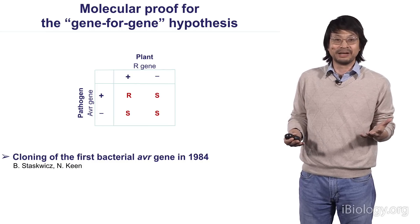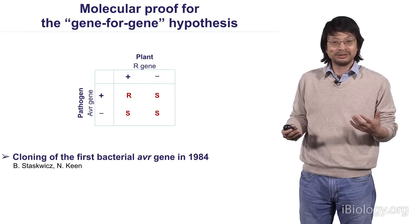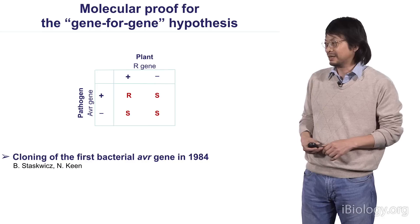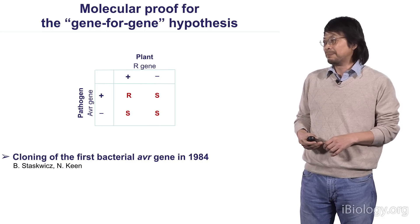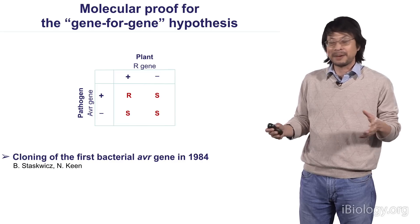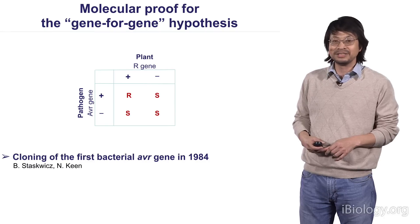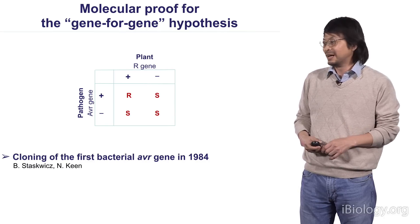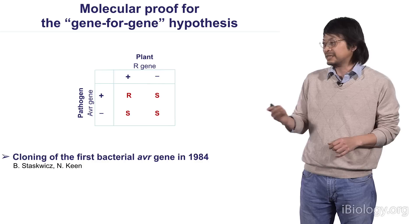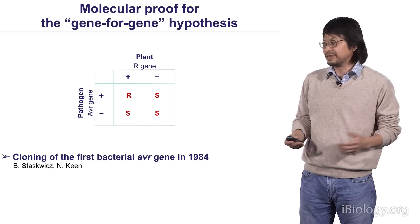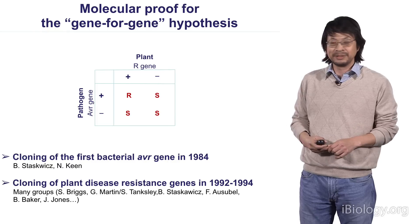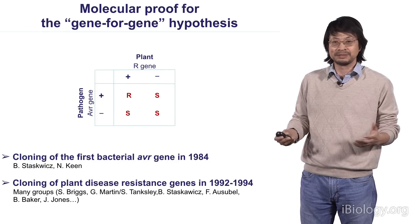This was a hypothesis only, but about 10 to 15 years later, there was molecular proof for the existence of these interactions. Scientists started to clone these so-called avirulence genes from different kinds of pathogens. The initial few avirulence genes were actually cloned from bacteria, done by Brian Steskowitz at UC Berkeley and the late Noah King from UC Riverside. And then, about 10 years later, a number of R genes were cloned from different plant species.